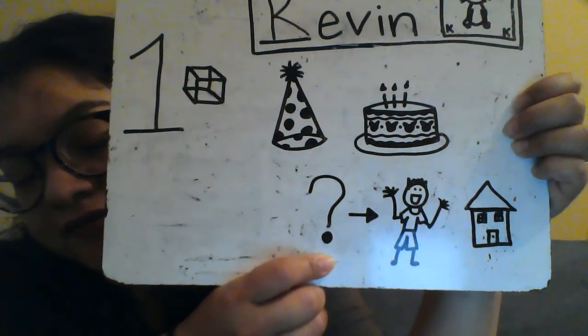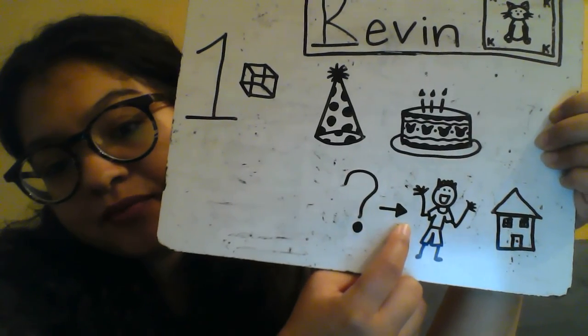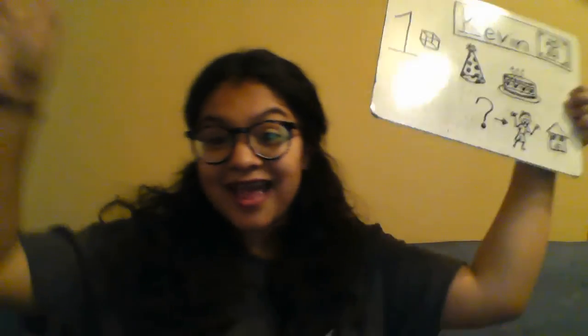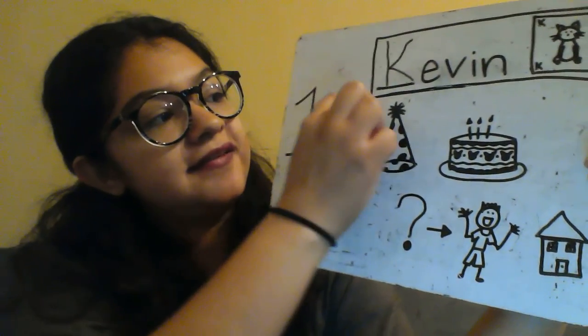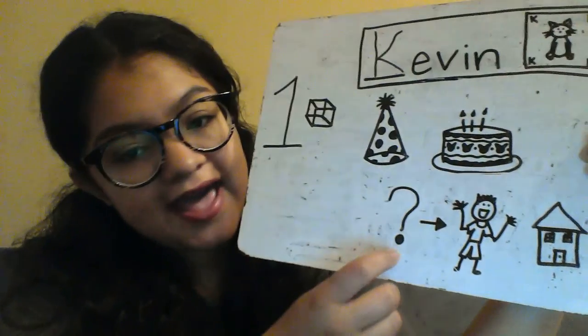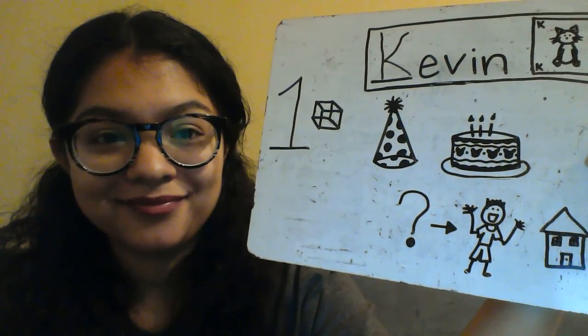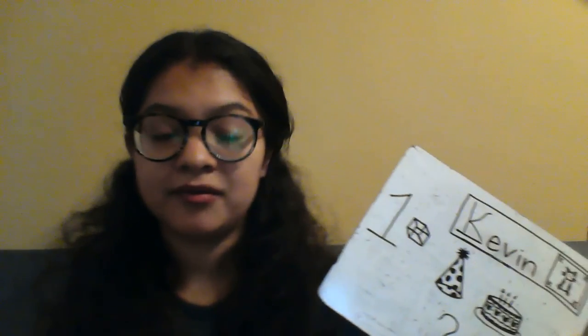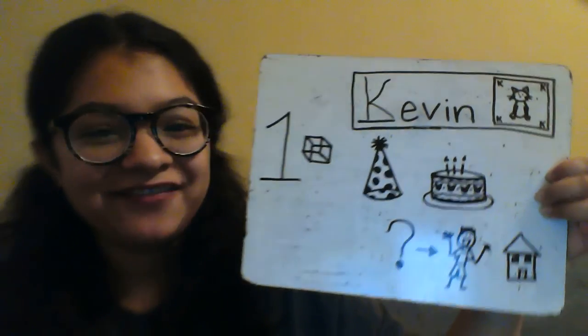There's one last part of our message. Do you see a question mark? So maybe that means what, or why, or how. And there's an arrow pointing to a person and they're going like this — like they're celebrating. And then what is this a picture of? A house, right? Or a home. So my question to you is, since today is Kevin's birthday, how can he celebrate at home? Maybe he can make a birthday dessert, like a cake, or some cupcakes, or some brownies — some fun sugary dessert to eat today. If you have any other ideas for Kevin to celebrate his birthday at home, then add a comment or post a video to our Seesaw journal. And I'll see you in a bit for small group time.